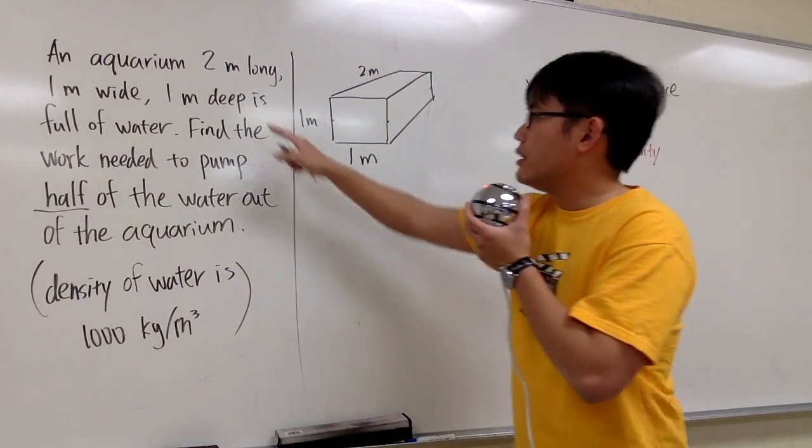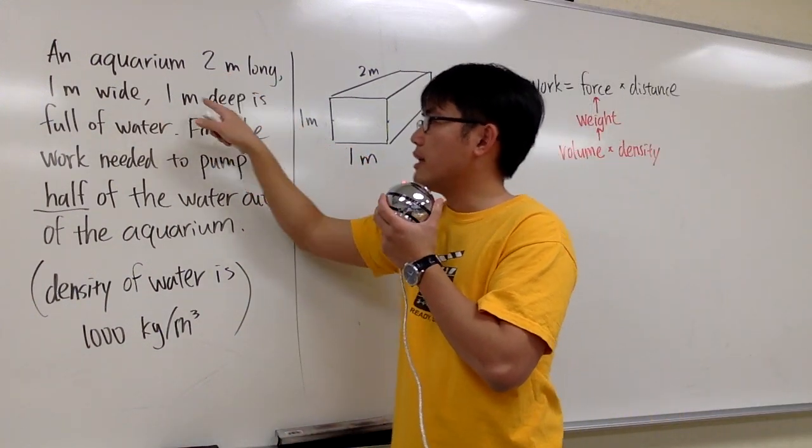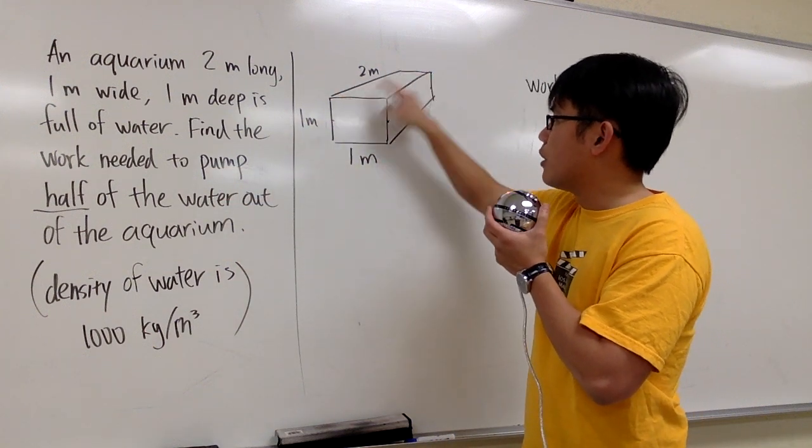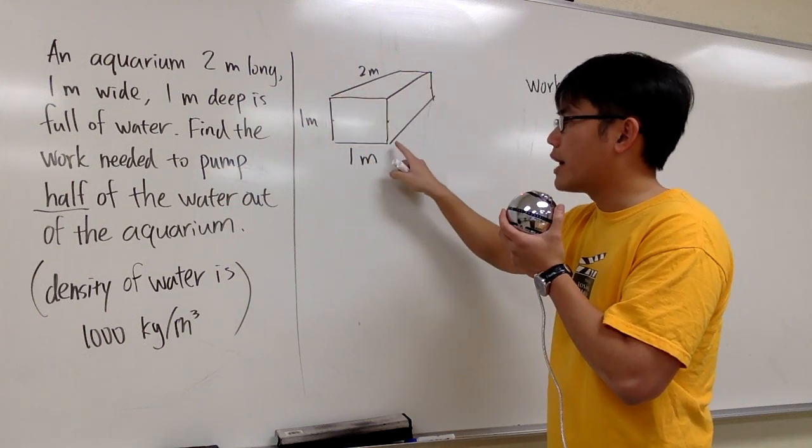We are given an aquarium. It is 2 meters long, 1 meter wide, and 1 meter deep. You can see here's the picture: 2 meters long, 1 meter deep, and 1 meter wide.